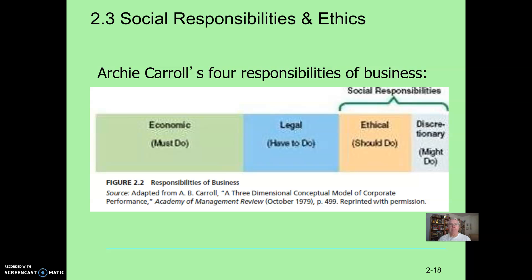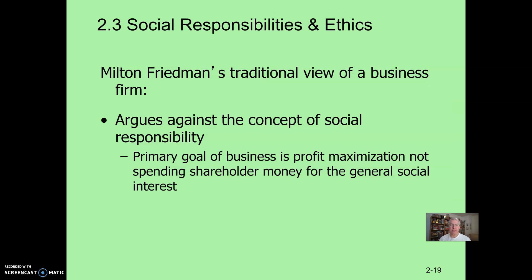Archie Carroll suggested there are four responsibilities of business. Most important is the economic — making money. Next is satisfying the legal constraints of the country. Then ethical and discretionary responsibilities come later, but they're still important as social responsibilities. The Chicago School, under Milton Friedman, on the other hand, argued that social responsibility should not be applied to businesses. They should simply maximize profit, and then shareholders can do whatever they want with that profit. We have both of these views in society today, and often it's a balancing act.